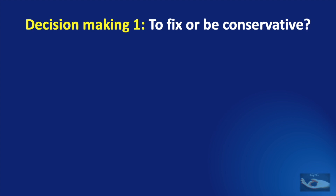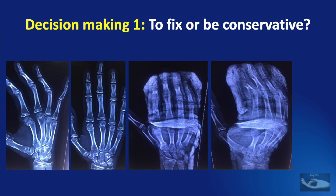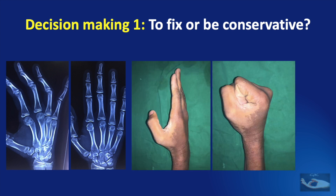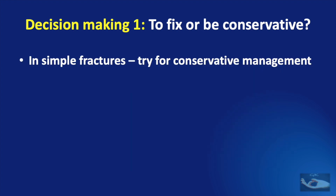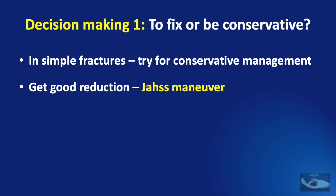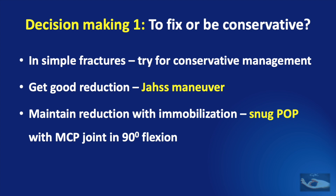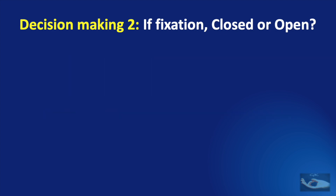The first dilemma in management is the decision making — should we fix it or manage the fracture conservatively? Here you can see a fracture of the neck of the second metacarpal bone managed conservatively with only a POP and good clinical results. The general rule is that in simple fractures of the metacarpals, we must try for conservative management. But this will be possible only if we get good reduction using the JAS maneuver and maintain reduction with immobilization, placing the metacarpophalangeal joint in 90 degrees of flexion. If it is not amenable for conservative management, we need to fix it.